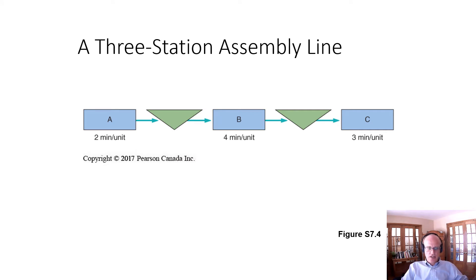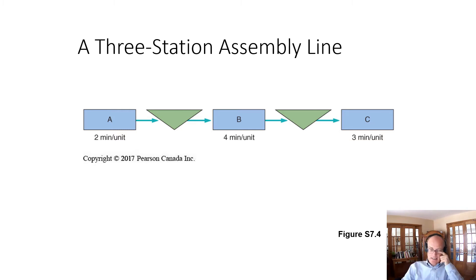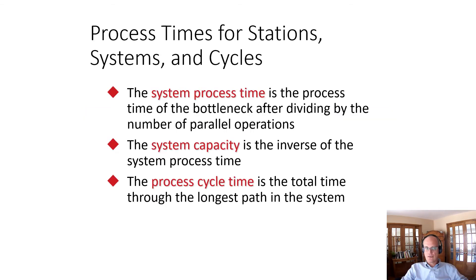Here we have a three-station assembly line. Station A takes 2 minutes per unit, B takes 4 minutes, and C takes 3 minutes. The process time for the system is 4 minutes because it is the longest — we can't move things through faster than 4 minutes per unit. The total cycle time is 2 + 4 + 3 = 9 minutes, though in practice units will wait at the bottleneck for units ahead to finish.